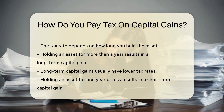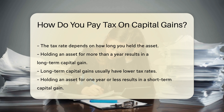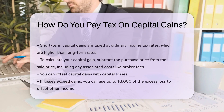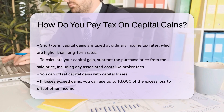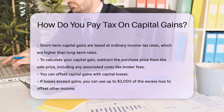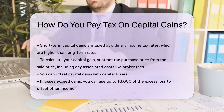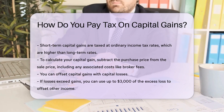To calculate your capital gain, subtract the purchase price from the sale price. Include any costs associated with the sale, such as broker fees. The result is your capital gain.